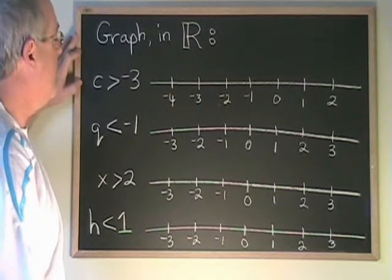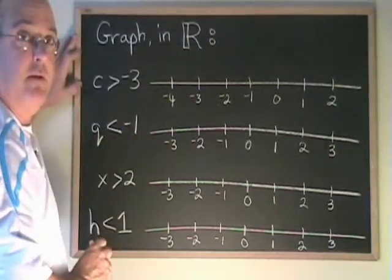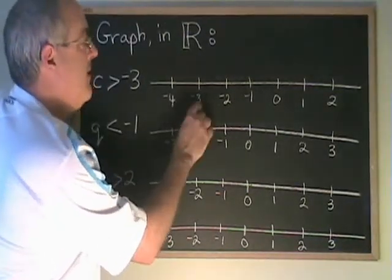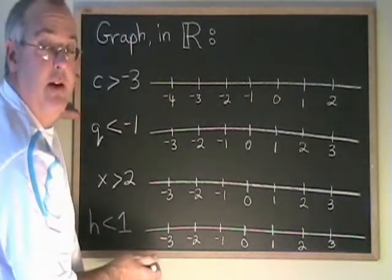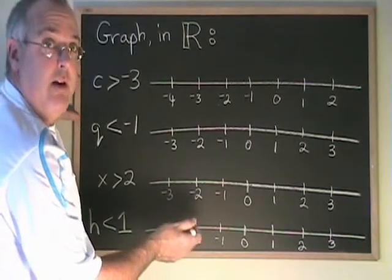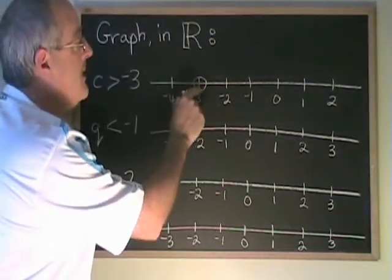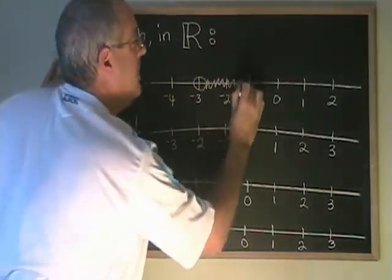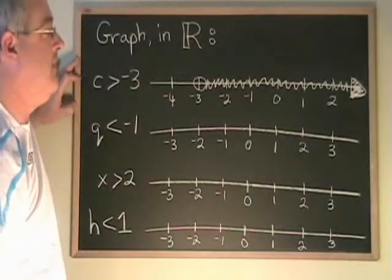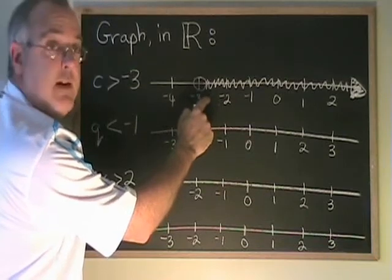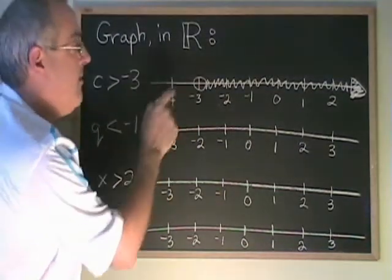Now let's look at graphing inequalities that have greater than and less than — instead of greater than or equal to and less than or equal to — when graphing within real numbers. C greater than negative 3: the numbers greater than negative 3 are all the numbers to the right of negative 3. Negative 3, though, is not greater than itself, so it is not part of the answer. What we do is put what we call an open circle around it. We don't fill in the center of the circle, showing that negative 3 is not part of the answer. But we shade from that circle all the way in the positive direction, putting an arrow to show it goes on forever. This makes it clear that all fractions and decimals between negative 3 and negative 2 are part of the answer — all real numbers greater than negative 3 — but negative 3 itself is not.